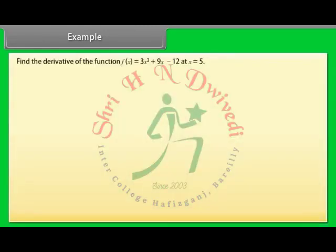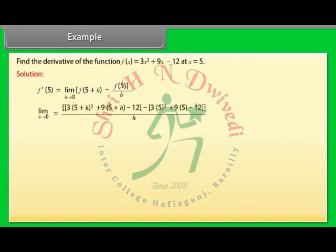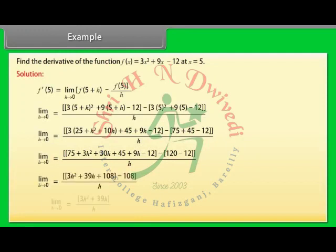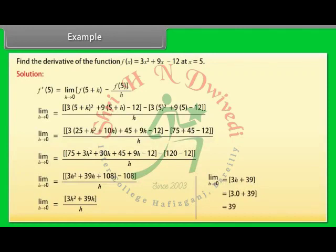Example: Find the derivative of the function f(x) = 3x² + 9x − 12 at x = 5. Solution: f′(5) = limit h→0 of [f(5+h) − f(5)] / h. By calculating it further, we get f′(5) = 39.